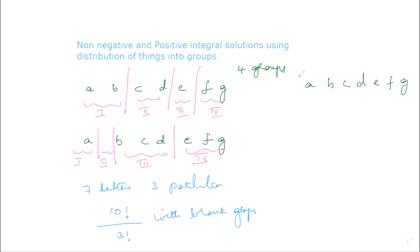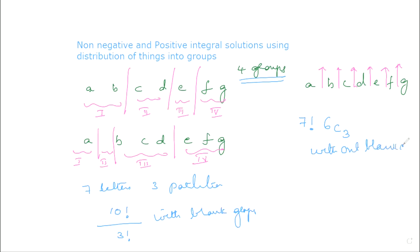Suppose I don't want any blank groups — then how do I do it? I would count the gaps in between the letters. For seven letters we have six gaps. Initially we arrange the elements: since there are seven elements they can be arranged among themselves in 7 factorial ways, and we have six gaps. To convert into four groups we need to place three partitions only in these gaps, so we select three spaces out of six. This way two partitions will not be placed together. This gives us the count without blank groups.